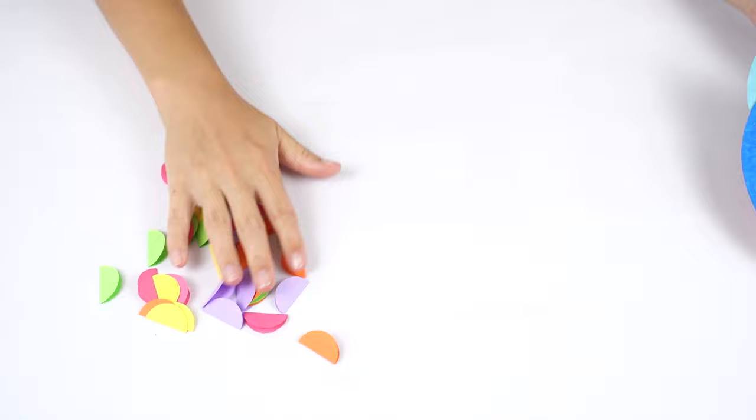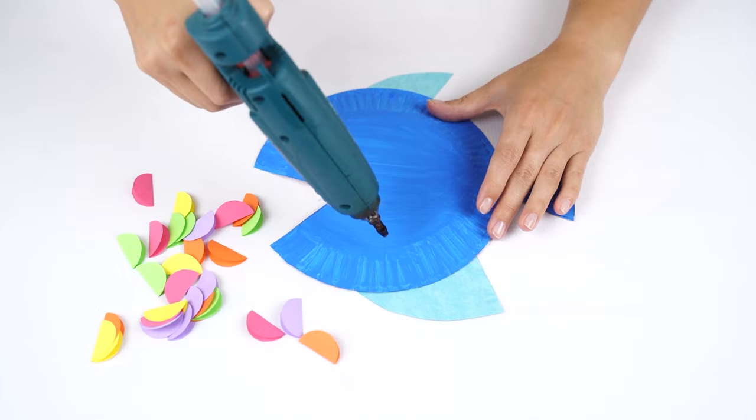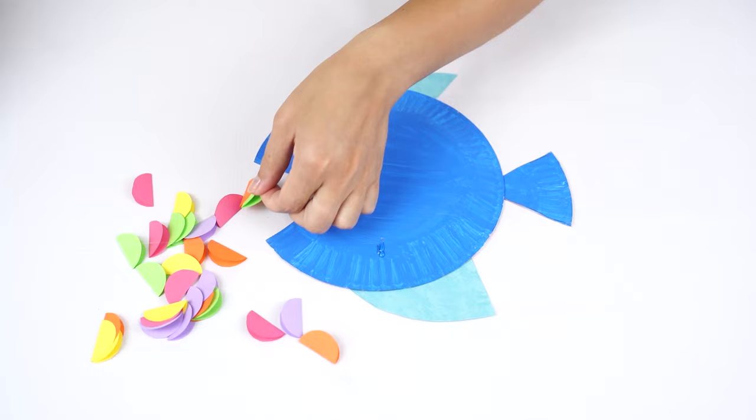To do so, put a dab of glue on the plate, giving some space around your mouth for the fish face, then paste one scale on.